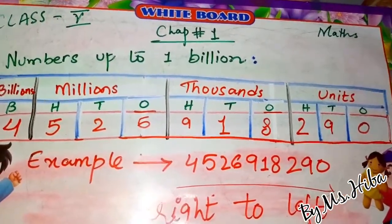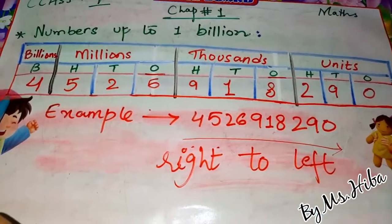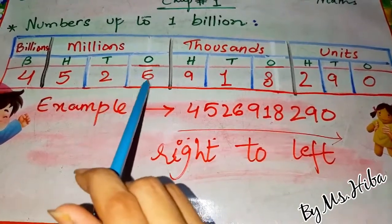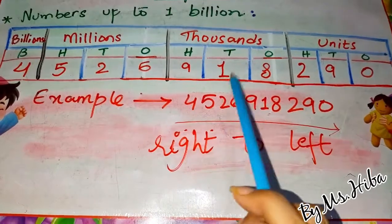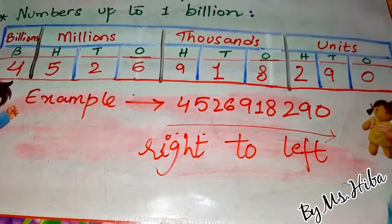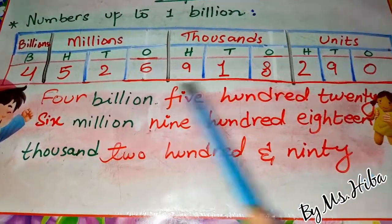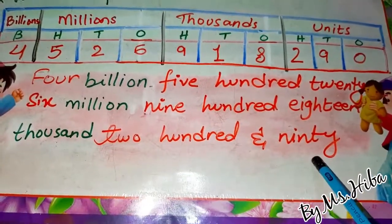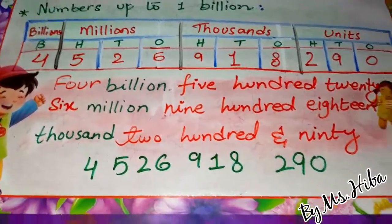I have placed all the numbers in the chart. Now we need to read it. The rule for reading a number is from right to left, starting from billions. So we read it as: four billion, five hundred twenty-six millions, nine hundred eighteen thousand, two hundred and ninety. So it becomes: four billion, five hundred twenty-six million, nine hundred eighteen thousand, two hundred and ninety.